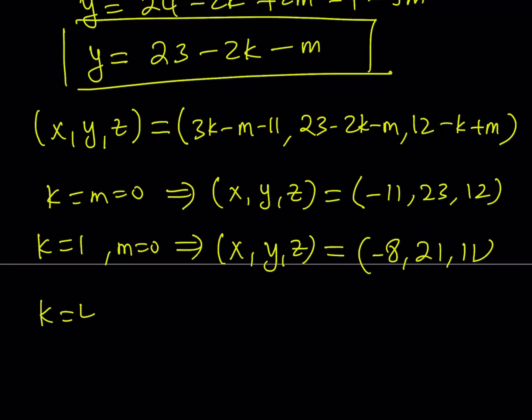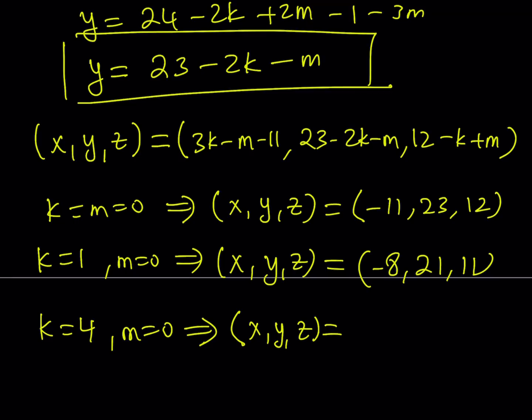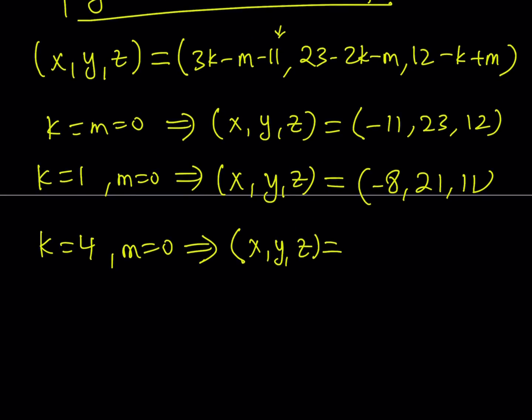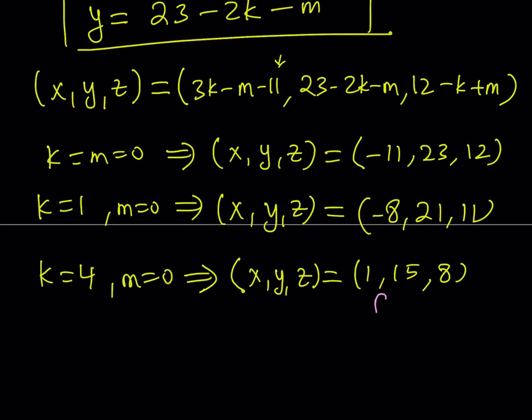Let's do something different so that we can get a nicer solution. If you do k equals 4 and m equals 0, notice that I'm always trying to stick to 0. The reason why I pick a large k here is because I want to get rid of the negativity of the 11 here so that I can get a positive answer. We get 1, 15, 8. And this is going to be my positive solution. Are there any other positive solutions? Check it out.